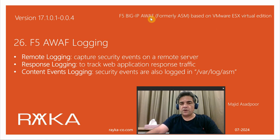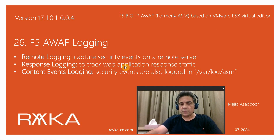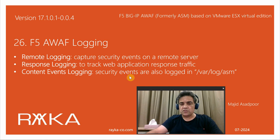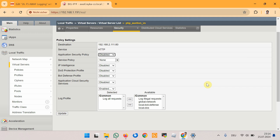Welcome to another video of the course F5 BIG-IP Advanced WAF or ASM. In this section I'm going to discuss and demonstrate three topics regarding F5 Advanced WAF logging: first, remote logging to log security events on a remote server; then response logging, which is disabled by default, to log web application response traffic in addition to request traffic. Web application security events can be monitored only through the GUI, but by activating content events logging, security events are also logged in /var/log/asm, which can be useful for troubleshooting.